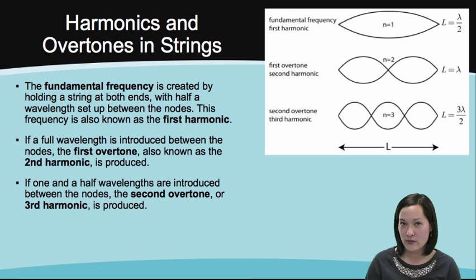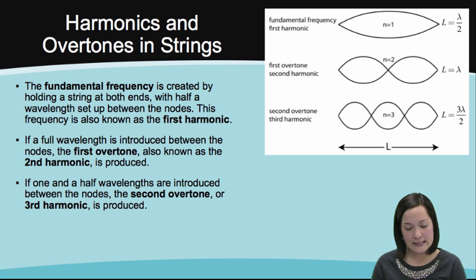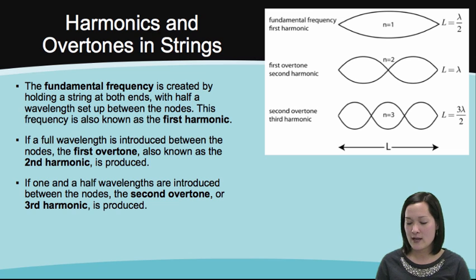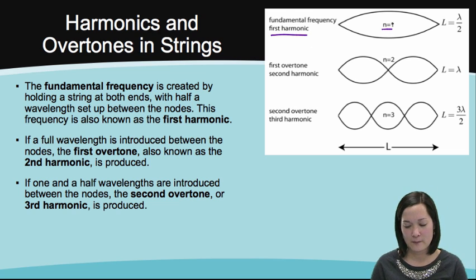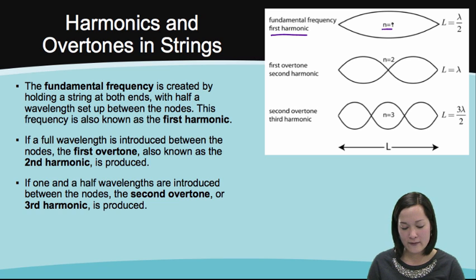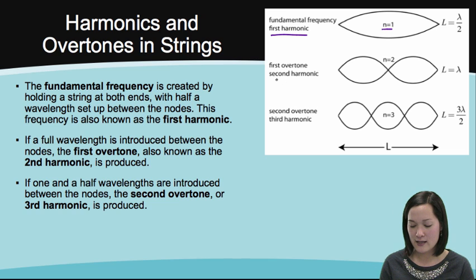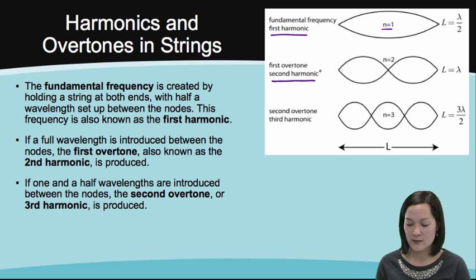To find the harmonics and overtones in string instruments, the fundamental frequency is created by holding a string at both ends, with half a wavelength set up between the nodes. This frequency is also known as the first harmonic. If a full wavelength is introduced between the nodes, the first overtone, also known as the second harmonic, is produced. The second harmonic is n equals 2.